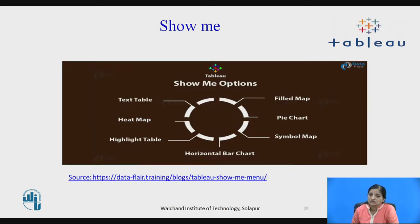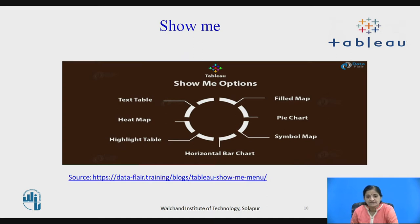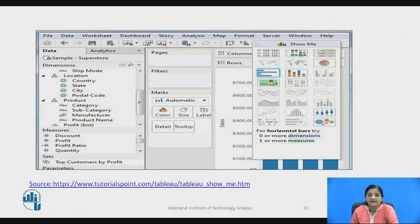Show Me has the following options: text table, heat map, highlight table, horizontal bar chart, field map, pie chart, and symbol map. We will be studying all these options in the next video in detail. This tool is seen on the right-hand side of the screen and has various options. Some of the options are grayed out, which means those options cannot be used with this particular data set.